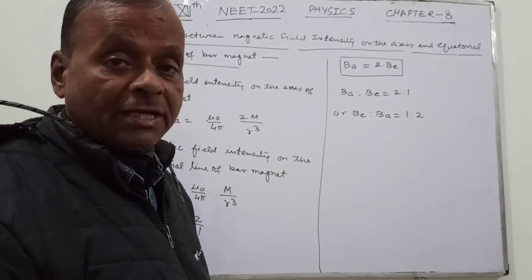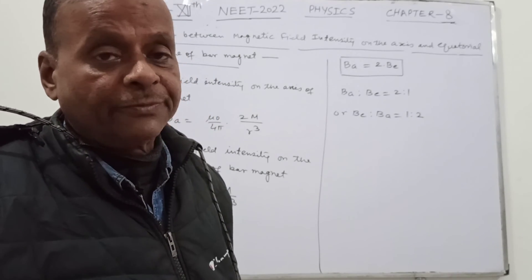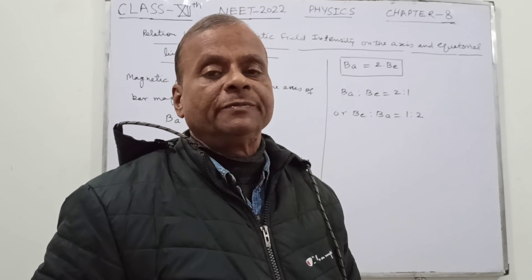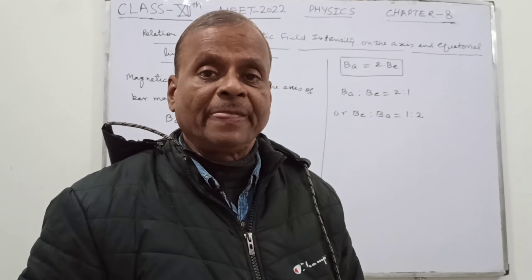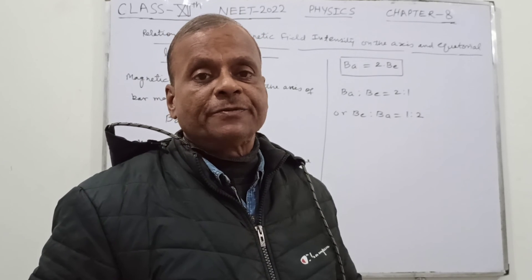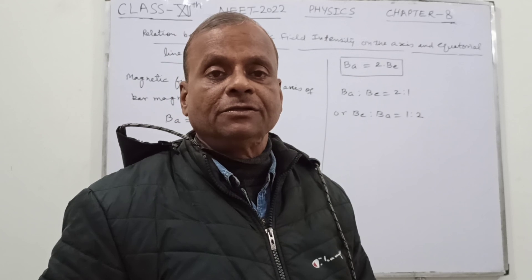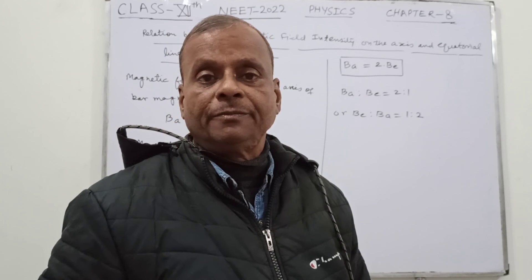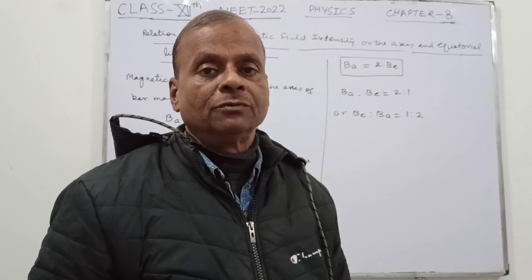So this is the relation that is generally asked, which has been asked many times in the NEET exam and in engineering exams also. This is the relationship between the magnetic field intensity on the axis and the equatorial line of the given bar magnet. Thank you very much.